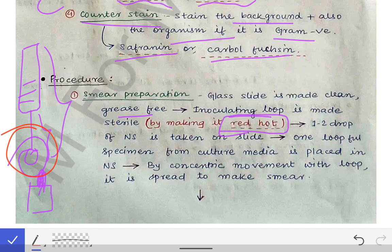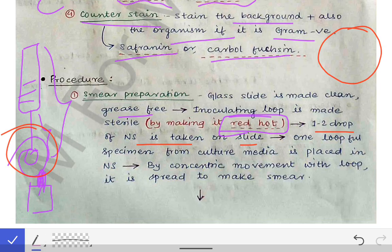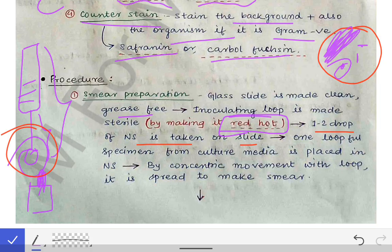Then we dip the inoculating loop in normal saline and take one to two drops of normal saline onto the slide. After that, we take the specimen from the culture media. The culture media has confluent colonies and some discrete colonies. We take a single discrete colony using the inoculating loop.